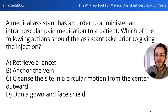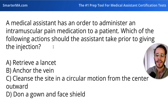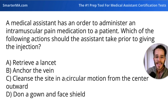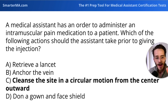Next question. A medical assistant has an order to administer an intramuscular pain medication to a patient. Which of the following actions should the assistant take prior to giving the injection? A, retrieve a lancet. B, anchor the vein. C, cleanse the site in a circular motion from the center outward. Or D, don a gown and face shield. The answer is C — cleanse the site in a circular motion from the center outward.